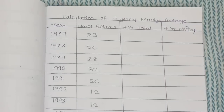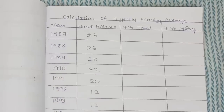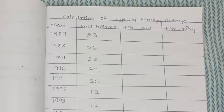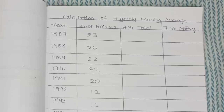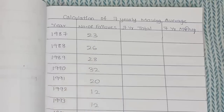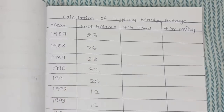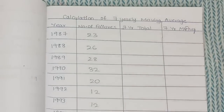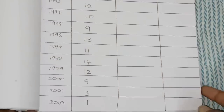Here you can see the question: calculation of seven years moving average. They will give years and some number — for example, number of failures. You need to calculate the seven years moving average. The columns you will have are: year column, number of failures column, seven years total column, and last column is seven years moving average — these four columns we need to calculate.